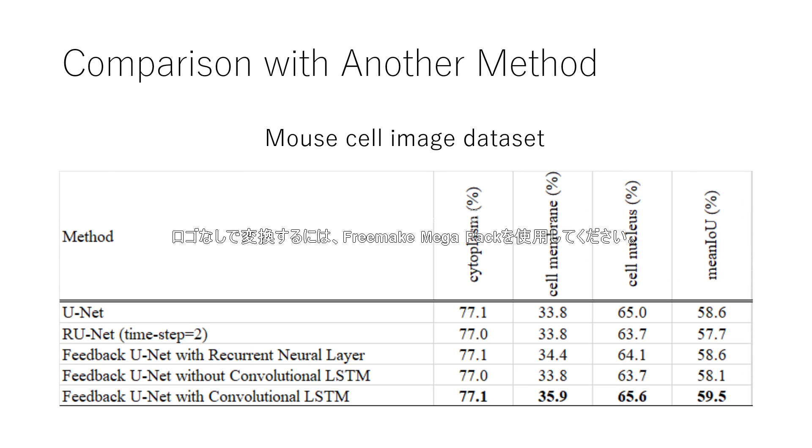Our model achieves the best accuracy on mouse cell image dataset. For the method, there is no improvement from baseline U-Net. In addition, our approach has higher generalization ability than R-UNet. Further, it shows the effectiveness of convolutional LSTM, the recurrent neural layer.